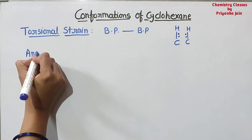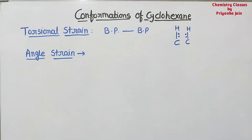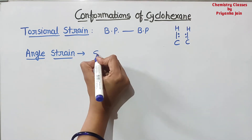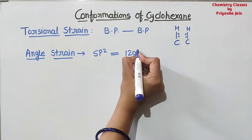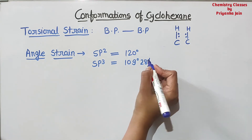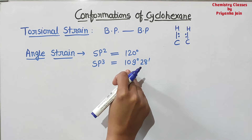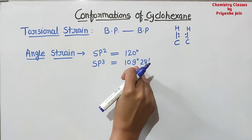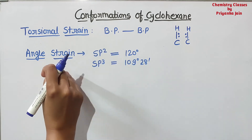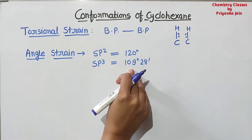The next type of strain is the angle strain. We know that for each type of hybridization, there is a particular angle. For example, for SP2 hybridization the angle should be 120 degrees, and for SP3 hybridization the angle should be 109 degrees and 28 minutes. But whenever there is a deviation from this angle — if the angle in the molecule is somewhat less than or greater than this — there will be a strain generated called the angle strain. Higher the deviation from this angle, higher will be the strain.